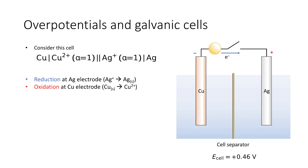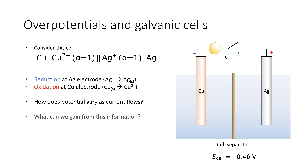What we're really interested in with the galvanic cell is, as it's doing work and driving current through the external circuit, how does that potential vary as current flows through the circuit, and what can we gain from this information?